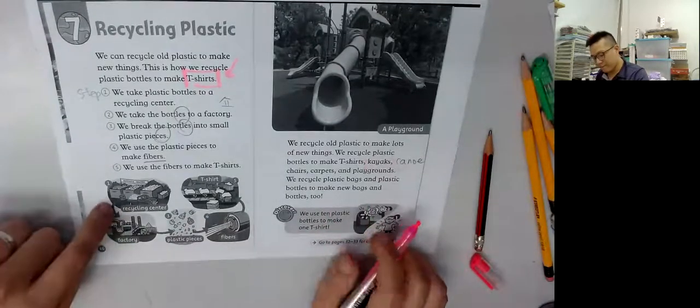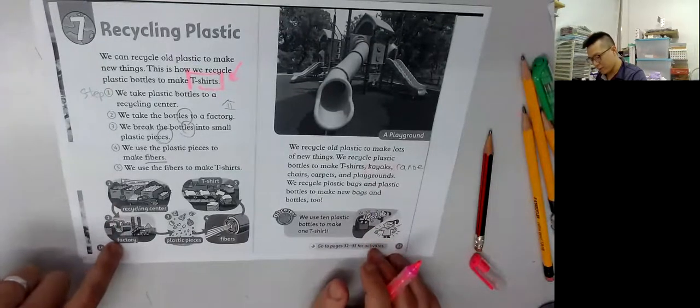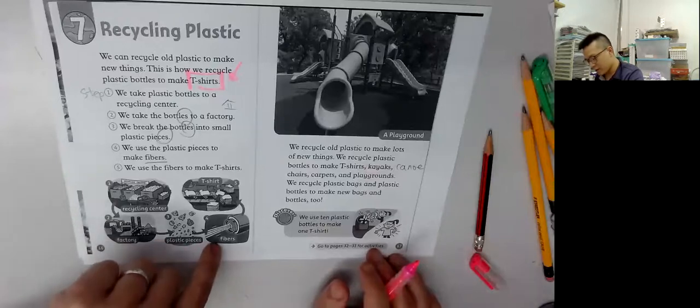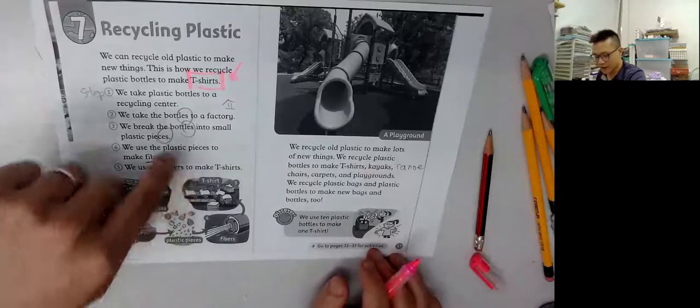Step one. Recycling center. Then we go to the factory. Then we go to the plastic pieces. Then we go to the fibers. Then we go to the t-shirt. That's how we recycle.